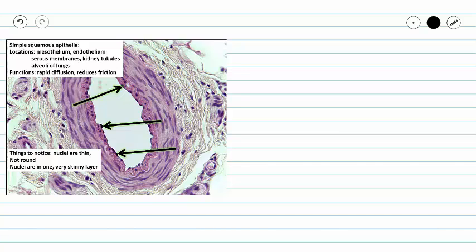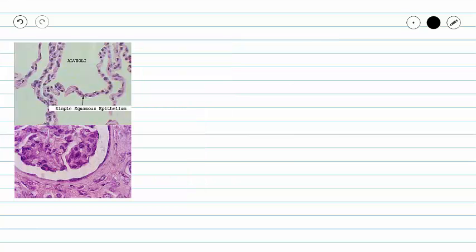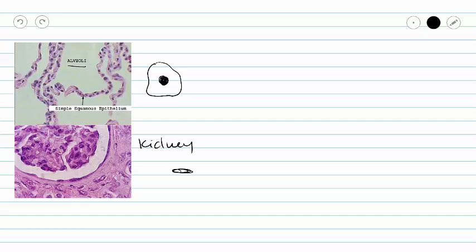We've now seen our simple squamous epithelium twice from the side, where it looks like a fried egg and the nucleus is our yolk. Now let's look at it from the top. Here we have two comparisons — a kidney tubule and alveoli in our lungs. We're seeing our simple squamous epithelium from the top, so again we have that fried egg outline with a nice round nucleus in the middle, whereas in the kidney we see our fried egg from the side and our cell looks a little different.